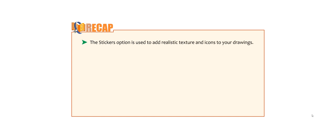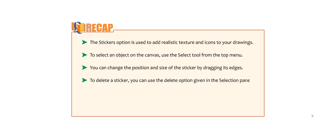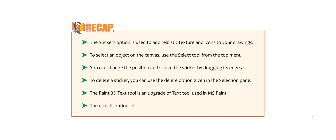Let us take a recap of this chapter. The sticker option is used to add realistic texture and icons to your drawings. To select an object in the canvas, use the select tool from the top menu. You can change the position and size of the sticker by dragging its edges. To delete a sticker, use the Delete option in the selection pane. The Paint 3D text tool is an upgrade of the text tool used in MS Paint. The Effects option helps us to enhance the appearance of objects.